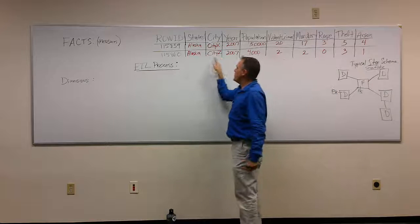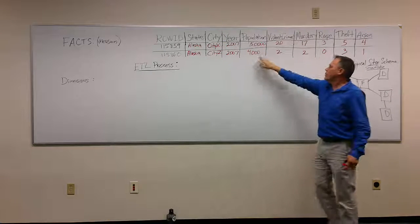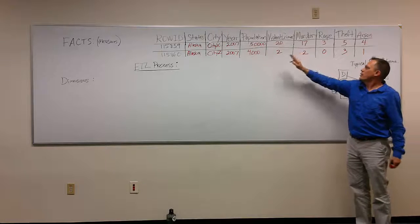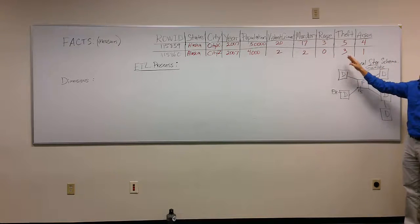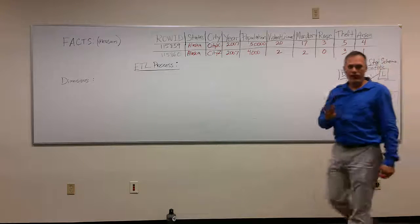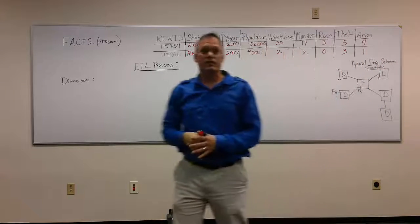Okay, and City Z within Alaska, same thing, 2007, population 4,000. There were 2 violent crimes, 2 murders, 0 rapes, 3 thefts, and 1 arson. Okay, so we're going to examine this first.